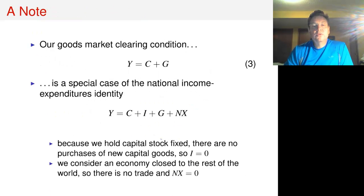As a quick note, this model has a market clearing condition for goods that says Y equals C plus G. This is a special case of what we've seen in the data. Actual GDP equals consumption plus investment plus government spending plus net exports. Because the capital stock is constant, investment is zero in this model, and we're assuming the economy is closed to the rest of the world, so net exports are zero.